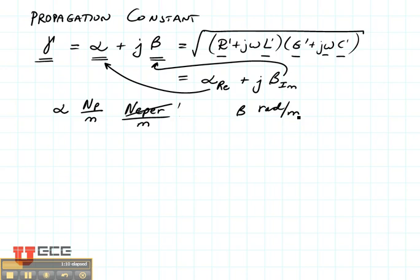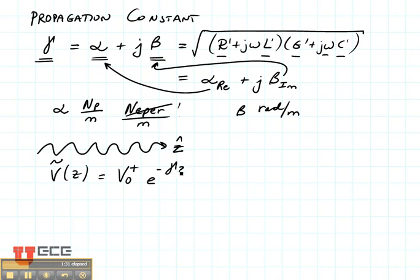Now the way we use this is when we have a wave propagating in the positive Z direction, like this, that's the positive Z direction, we can write the voltage as a function of Z as its initial magnitude, V0 plus, that's its initial magnitude, going in the positive direction, e to the minus gamma Z. That's equal to V0 plus e to the minus alpha plus j beta Z. Let's break that into two parts. That is V0 plus e to the minus alpha Z, e to the minus j beta Z.